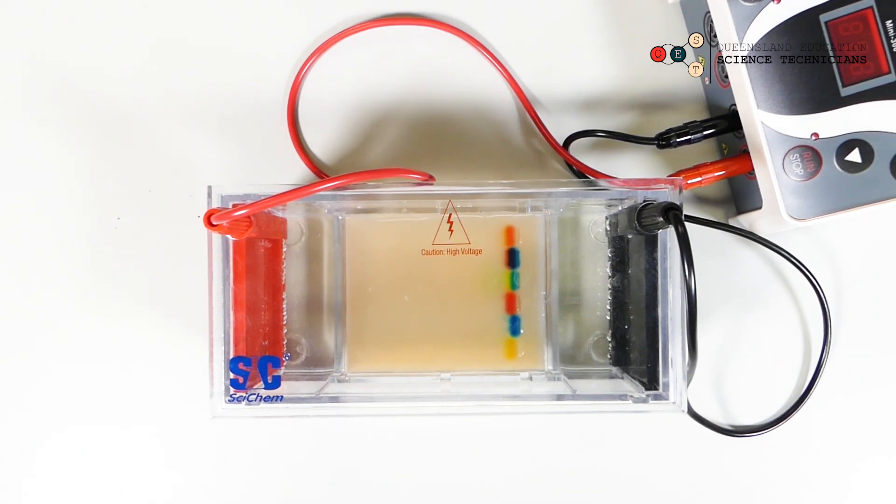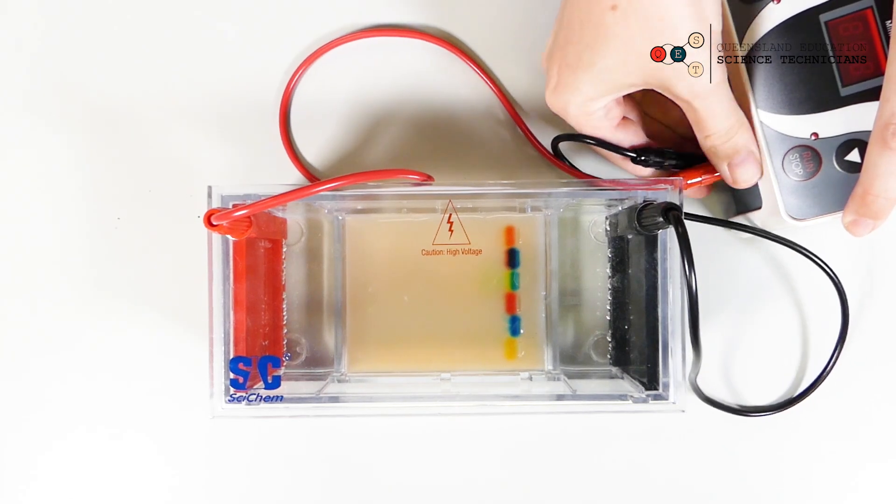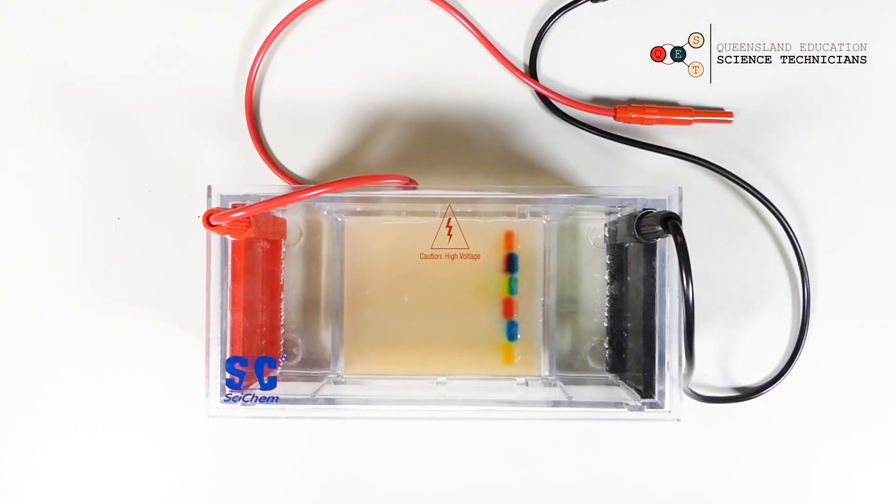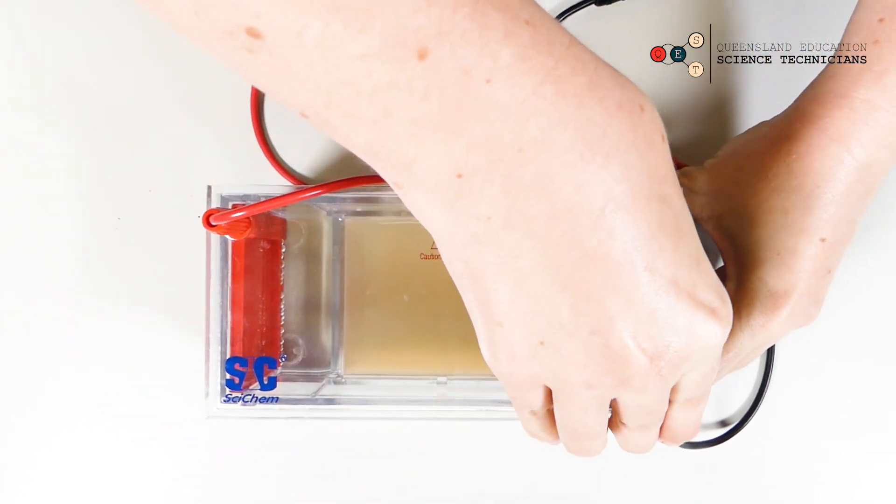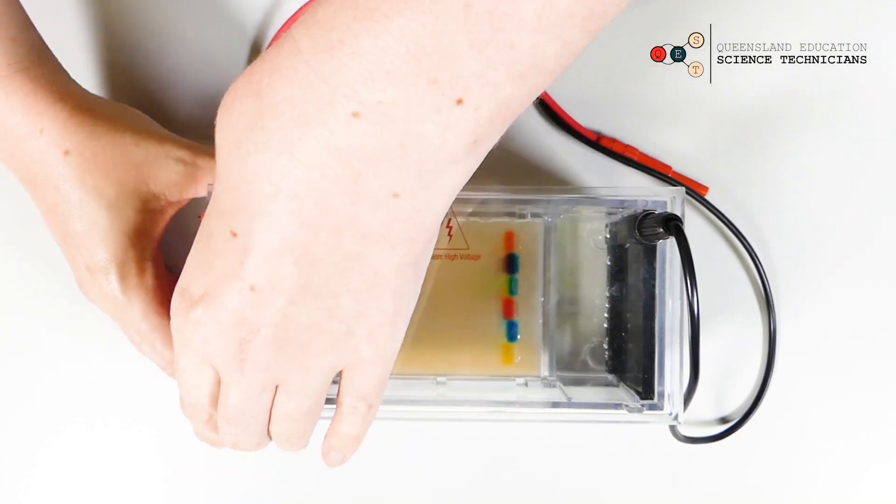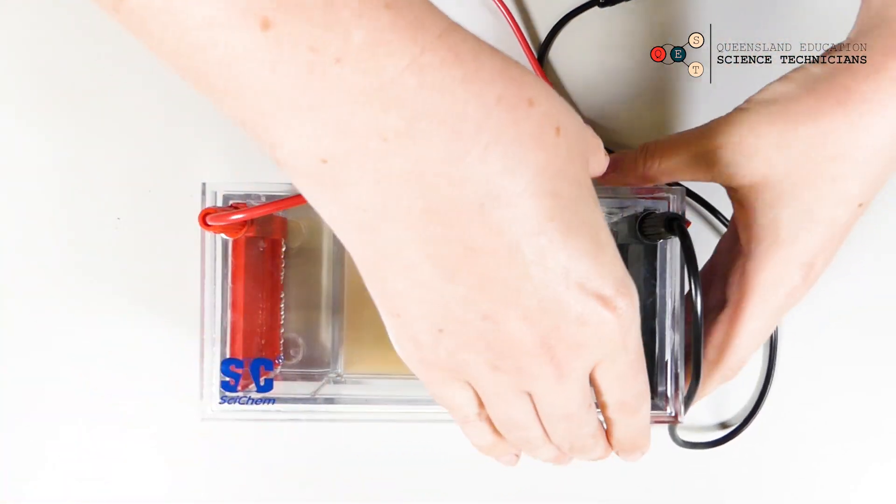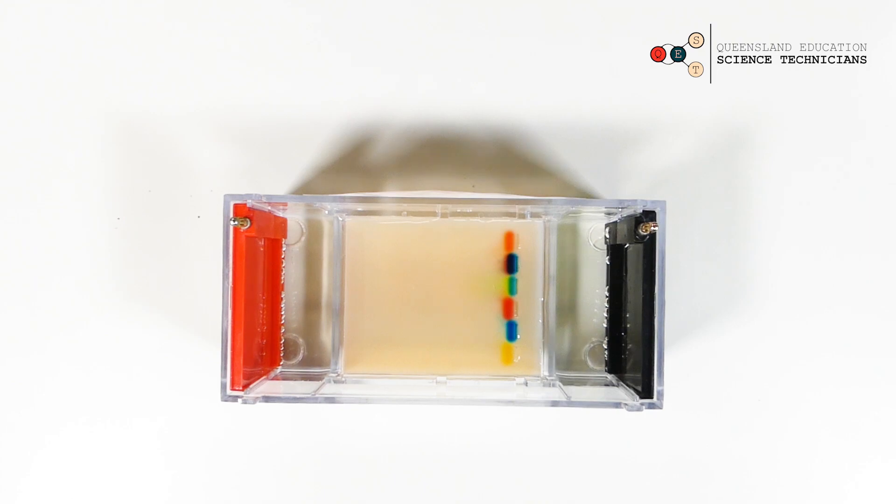Disconnect it from the power pack. Let's take our lid off and have a look at our gel. You can see that the colors have started to move from the cathode to the anode through the gel, and that the different colors have started to separate from each other.